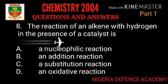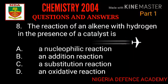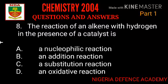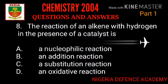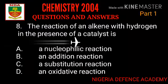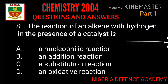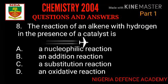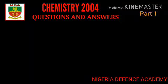The next question: the reaction of an alkane with hydrogen in the presence of a catalyst is known to be what? Option A: a nucleophilic reaction. Option B: an addition reaction. Option C: a substitution reaction. Option D: an oxidative reaction. The reaction is known to be an addition reaction. Option B is the right answer.